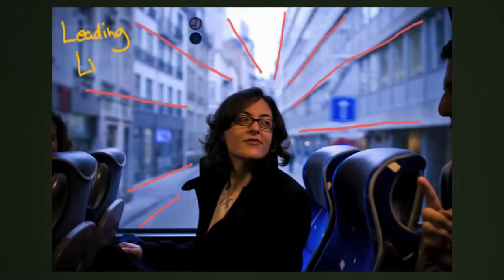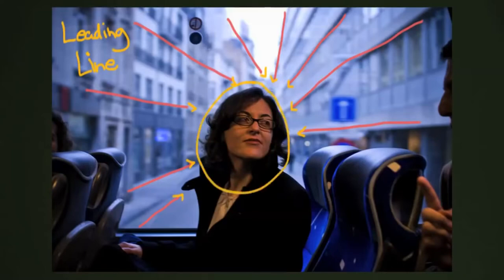Leading lines means that there are lines leading from one point of your composition to another. In this case, all the lines are leading straight to Caitlin's face. In other cases, you might have lines leading to other things, going in totally different directions and not all centered around one focal point. This is called a focal point — when everything is leading into one direction.